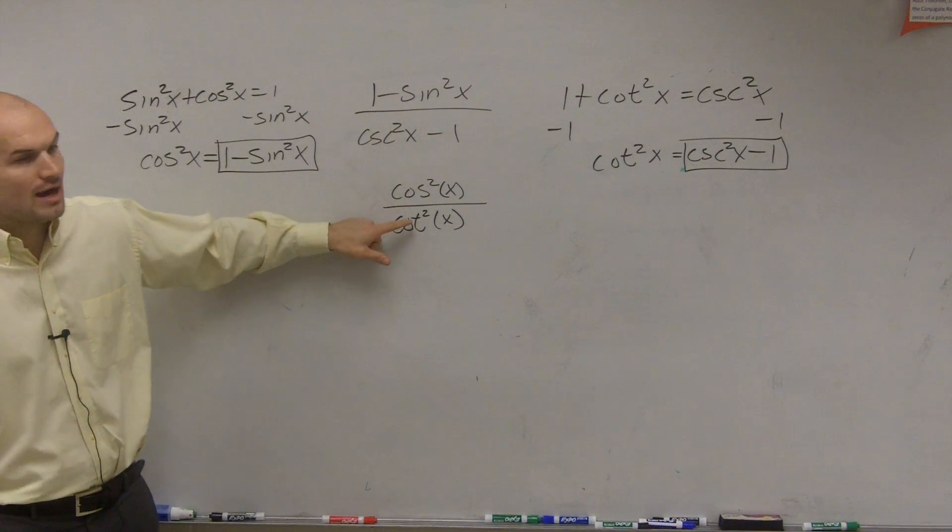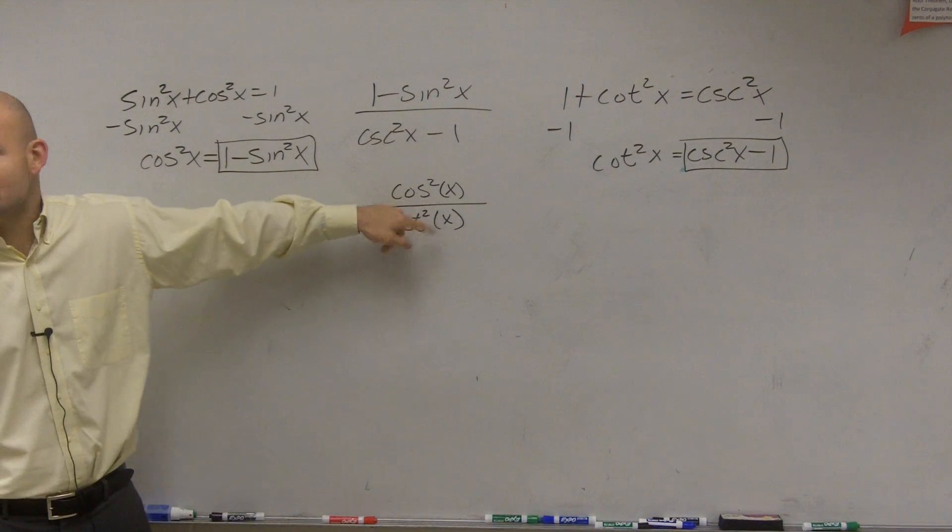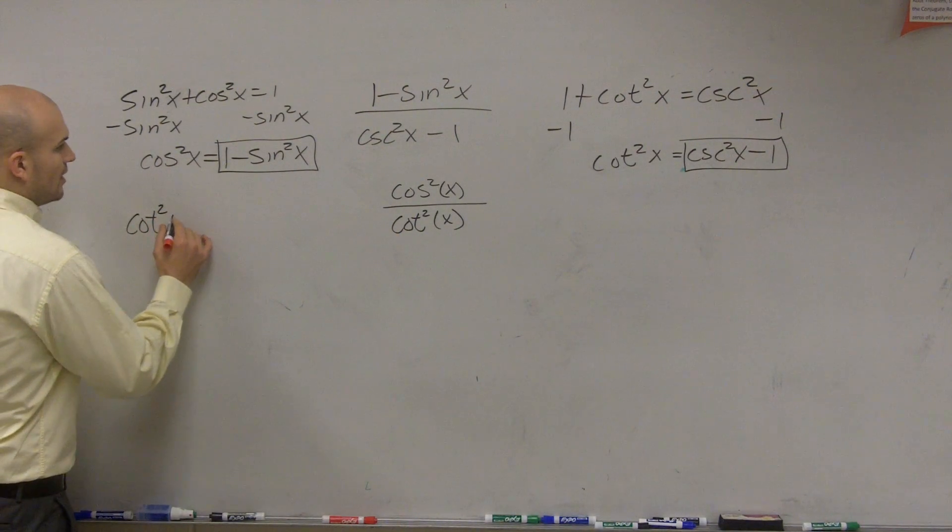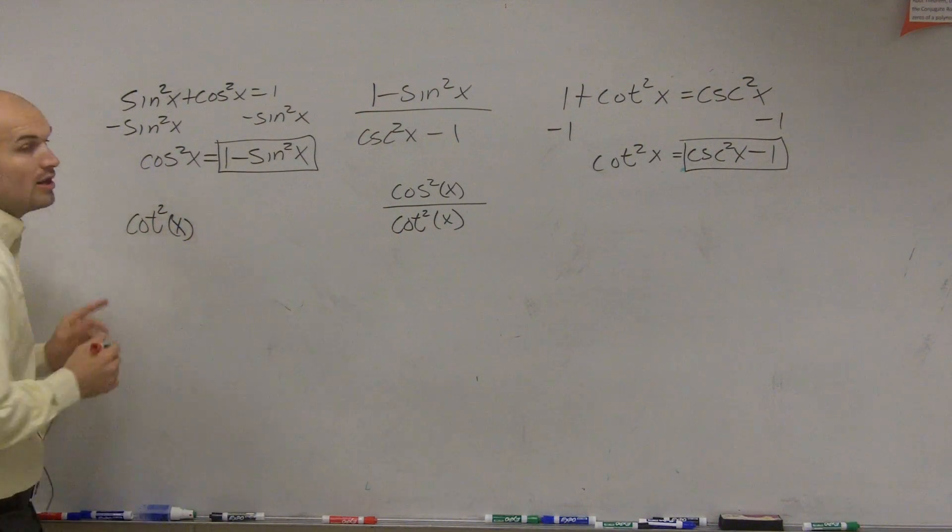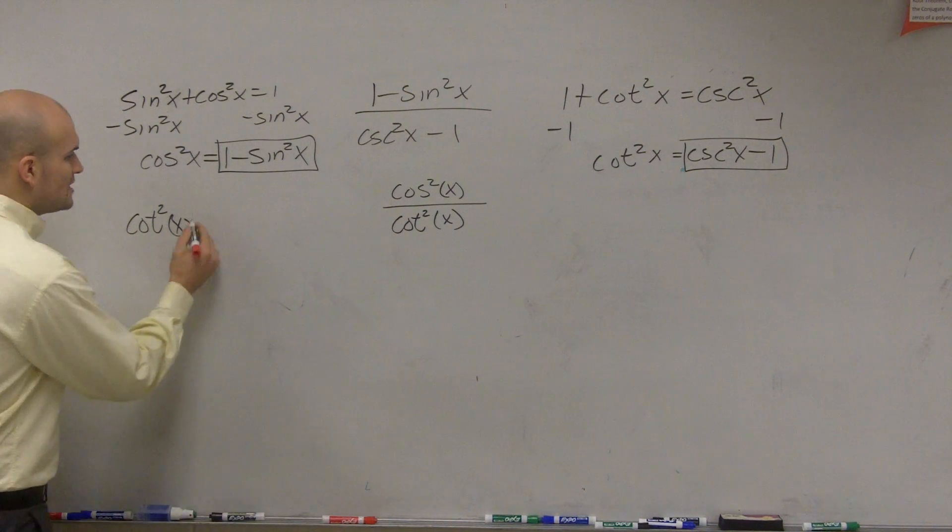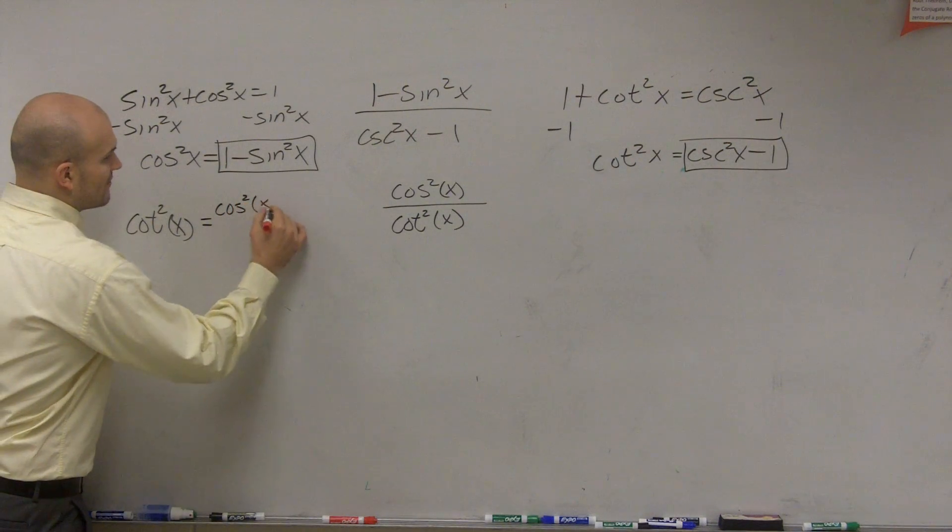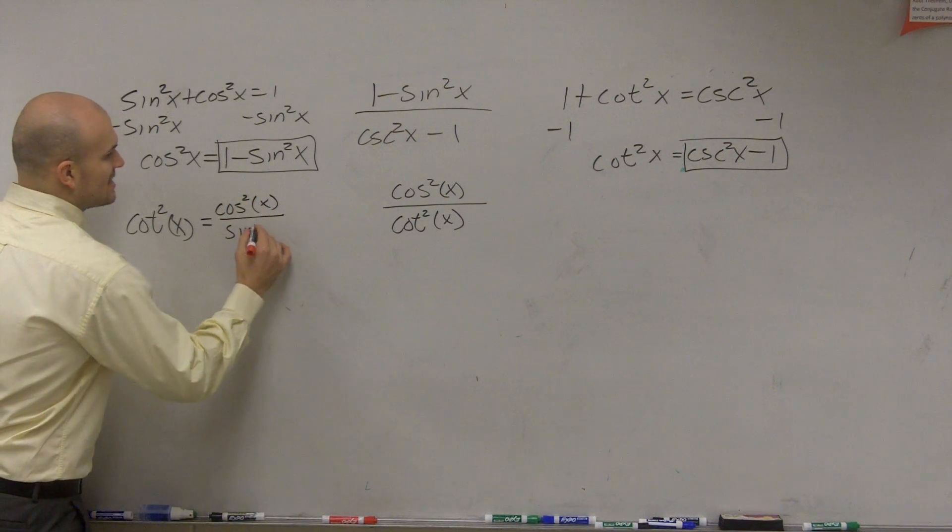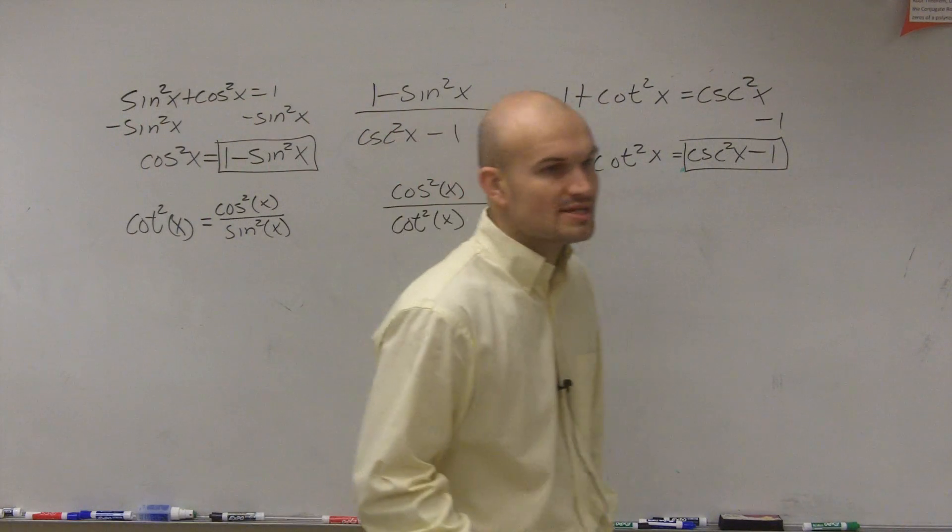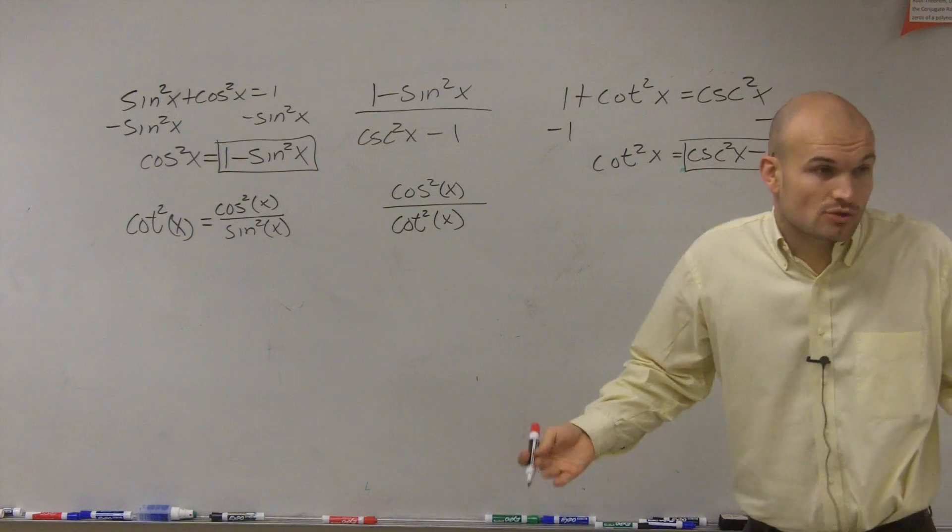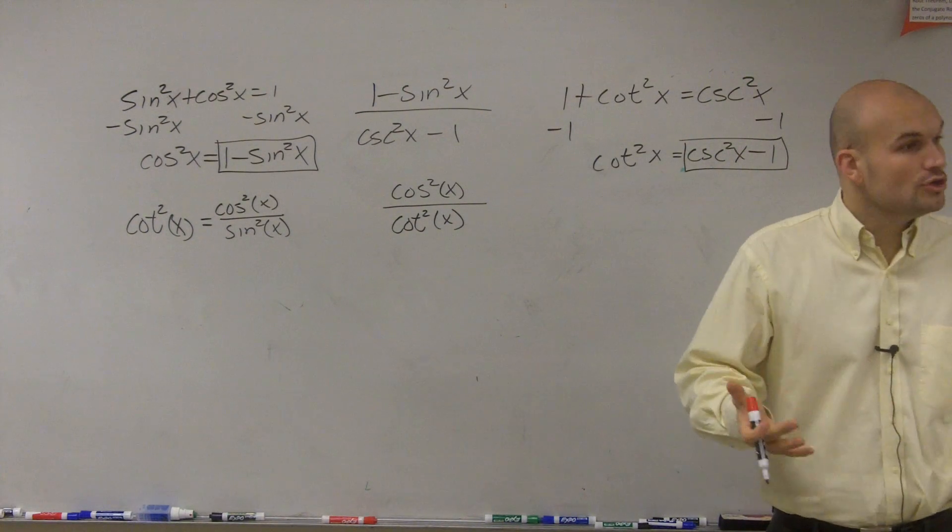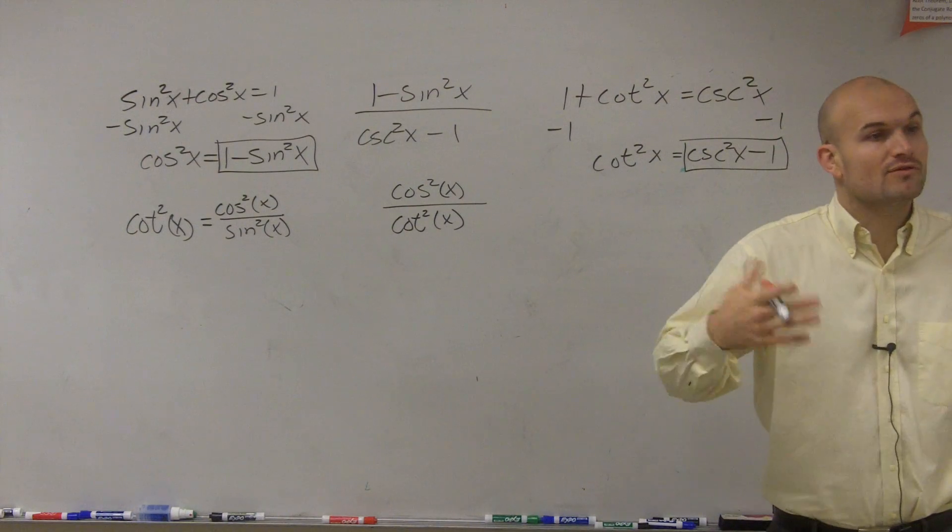Let's try to get rid of a fraction down here. If we know that cotangent, what is cotangent squared of x going to equal? We can apply the quotient identity. The cotangent squared would be the same thing as cosine squared of x divided by sine squared of x, because cotangent is cosine over sine. If it's squared, that just means it's cosine squared over sine squared. If it was cubed, it would be cosine cubed over sine cubed.